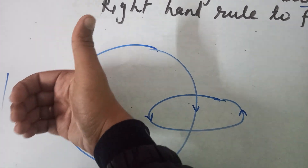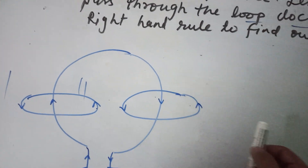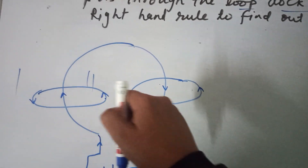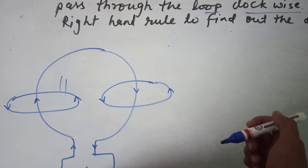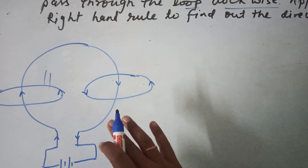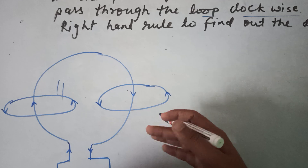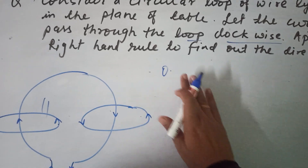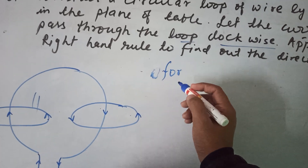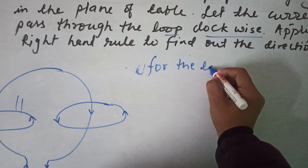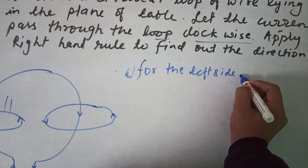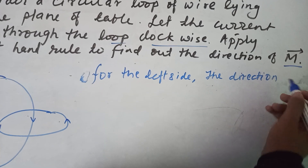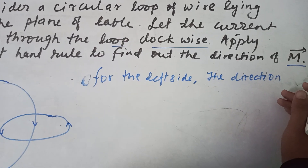Suppose the wire is here — since I am holding my phone with my other hand, I can't show you more clearly. I hope you get the idea of this question. So if you want to write some observations, we can say that for the left side, the direction — I hope you guys understood. If you still have doubt, you can ask me in the comment section.